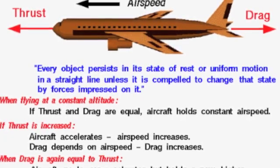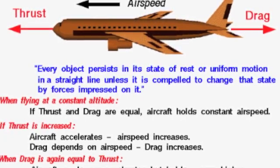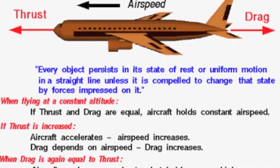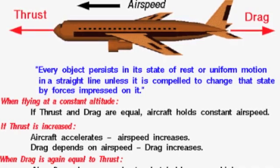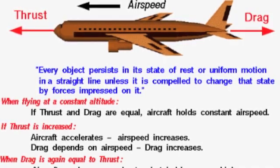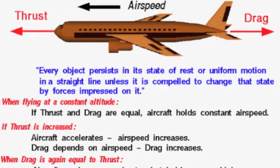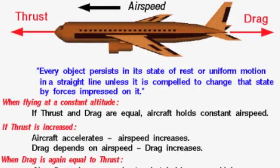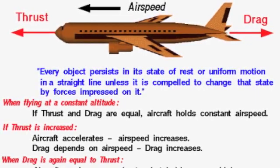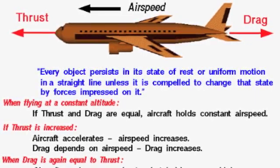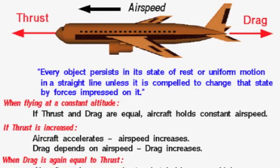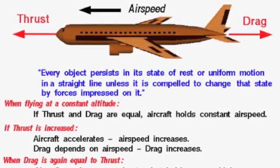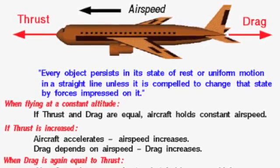To understand Newton's three laws of motion, you must first understand their purpose. Newton's laws of motion are three physical laws that together lay the foundation for classical mechanics. They describe the relationship between a body and the forces acting upon it, and its motion in response to said forces. The three laws are as follows.